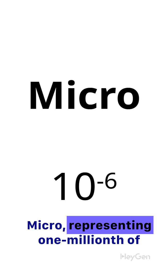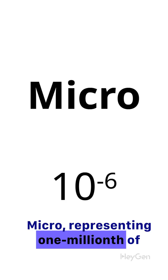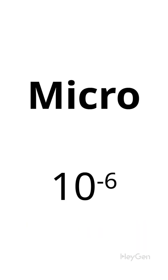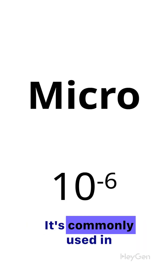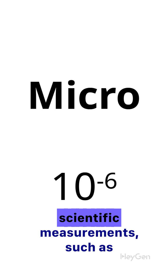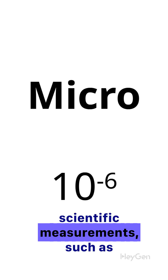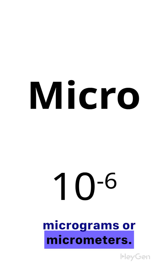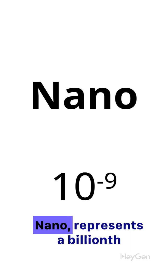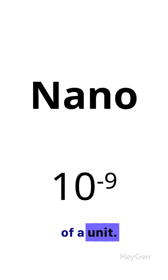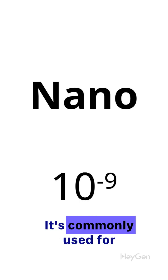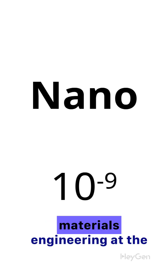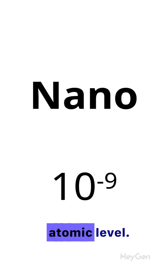Micro represents one-millionth of a unit. It's commonly used in scientific measurements, such as micrograms or micrometers. Nano represents a billionth of a unit. It's commonly used for materials engineering at the atomic level.